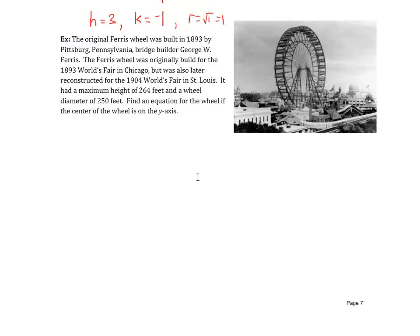For our last problem, we are asked to find the equation for a Ferris wheel. The original Ferris wheel was built in 1893 in Pittsburgh, Pennsylvania, by bridge builder George W. Ferris. The Ferris wheel was originally built for the 1893 World's Fair in Chicago, but was also later reconstructed for the 1904 World's Fair in St. Louis. It had a maximum height of 264 feet and a wheel diameter of 250 feet. Find an equation for the wheel if the center of the wheel is on the y-axis. We want to be able to know what is the actual equation of the Ferris wheel.